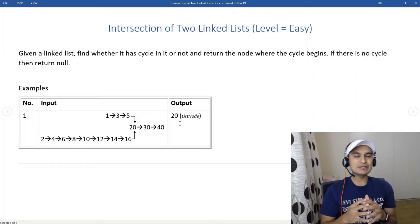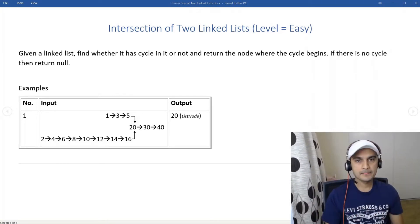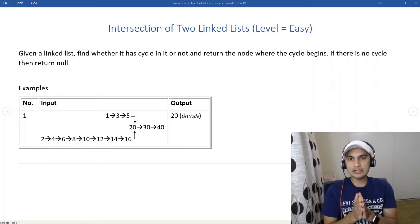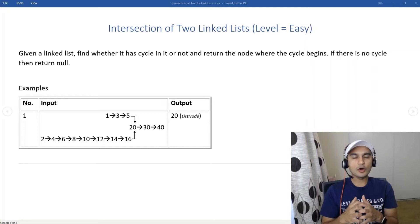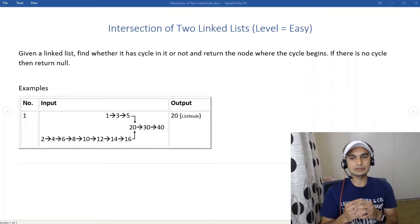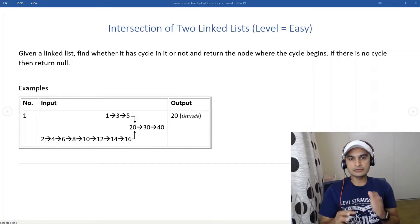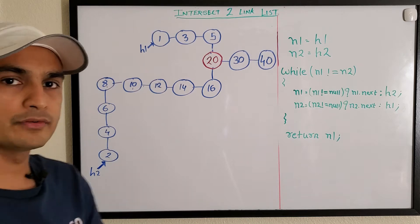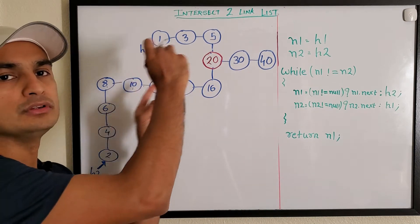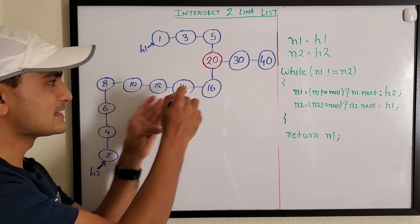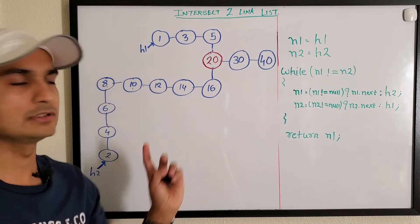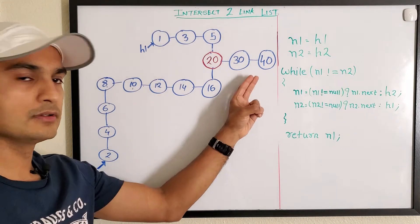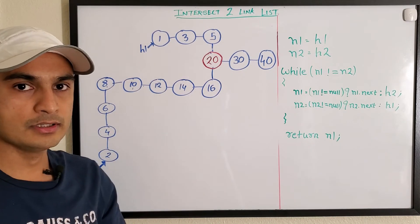The difficulty level is easy, though it's on the verge of medium. If you look at the problem it seems challenging, but once we figure out the trick behind it, it becomes clear. Let's go to the whiteboard to figure out the approach. We have these two lists: list one is a smaller list with six nodes, and list two has eleven nodes. They both intersect at node 20.